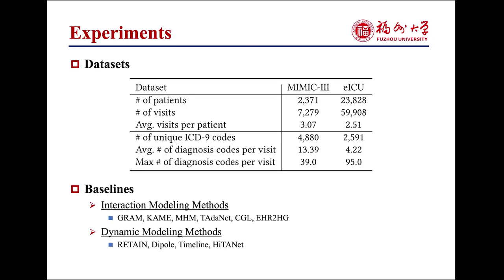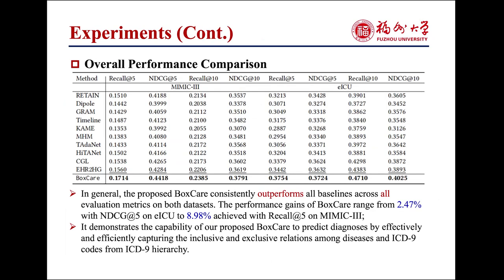We use two real-world EHR datasets, MIMIC-III and EICL, to verify the effectiveness of BoxCare, and adopt two kinds of baselines for comparison: interaction modeling methods and dynamic modeling methods. In general, our proposed BoxCare consistently outperforms all baselines across all evaluation metrics on both datasets, demonstrating its capability to predict diagnoses by effectively capturing inclusive and exclusive relations among diseases and ICD-9 codes from the ICD-9 hierarchy.